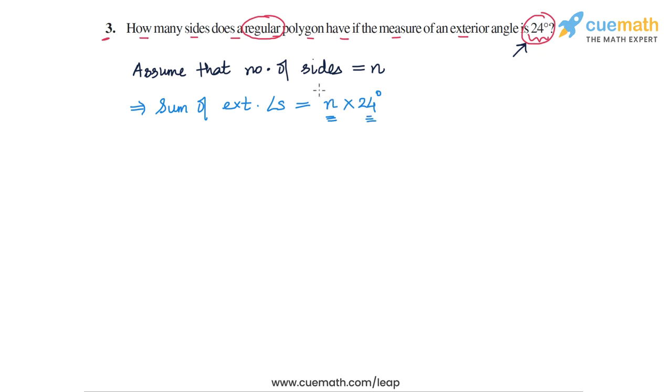Now we can make use of the fact that this sum, which we have written in terms of n, must be equal to 360 degrees, because the sum of the exterior angles in any polygon is equal to 360 degrees.